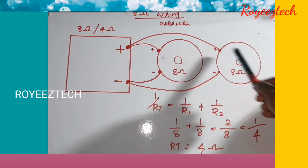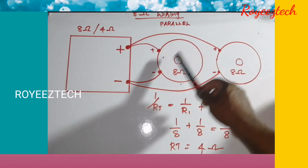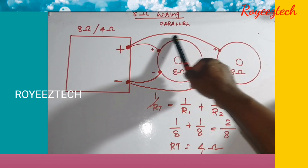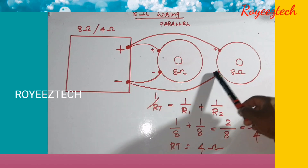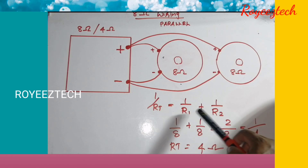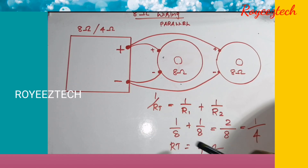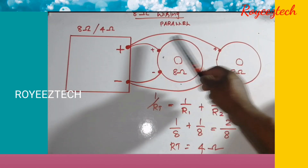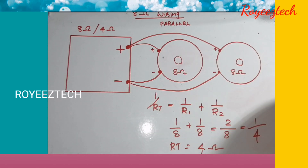For two speakers in parallel, the formula is: 1 by RT equals 1 by R1 plus 1 by R2, which equals 1 by 8 plus 1 by 8, equals 2 by 8. That gives a total resistance of 4 ohms. The preamplifier output impedance is equal to 4 ohms, which is within the acceptable range.